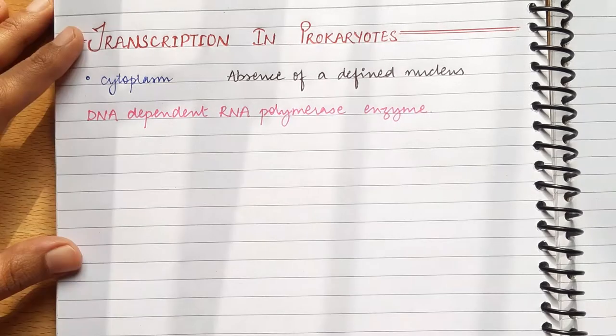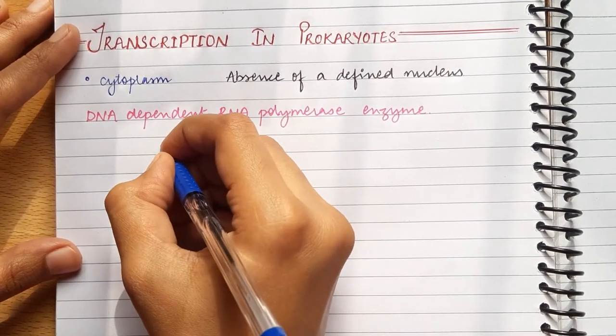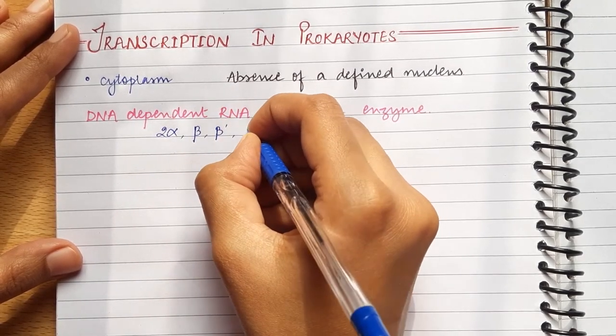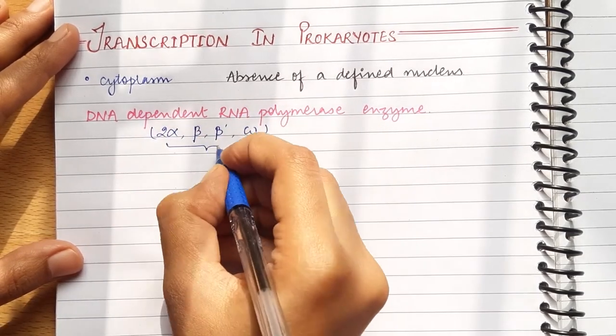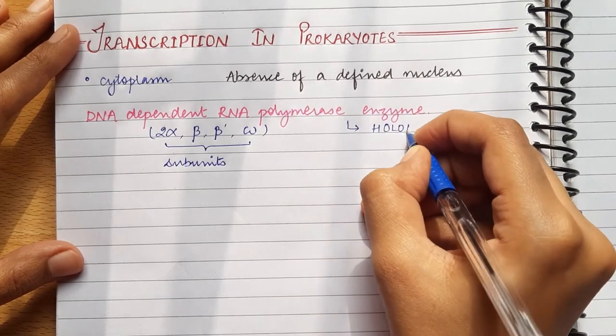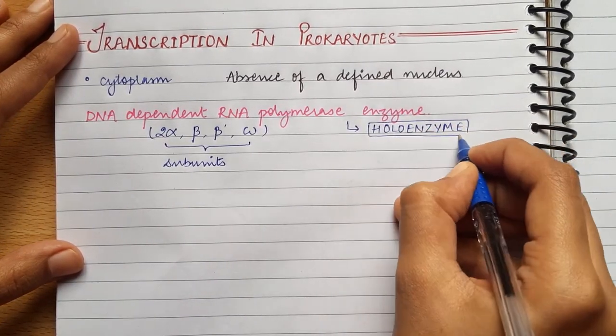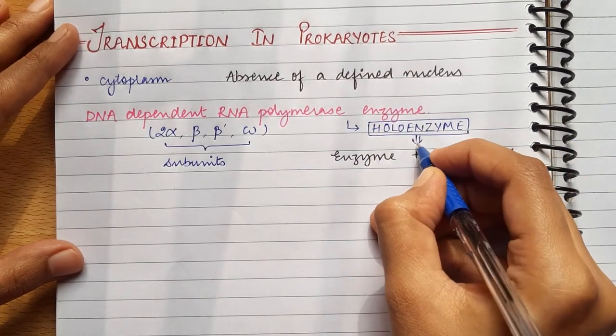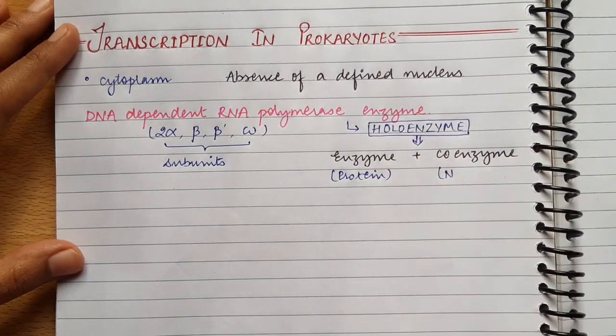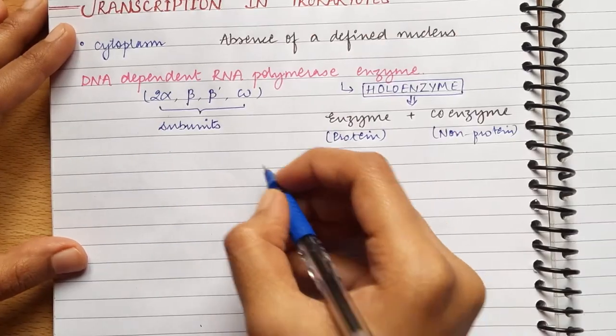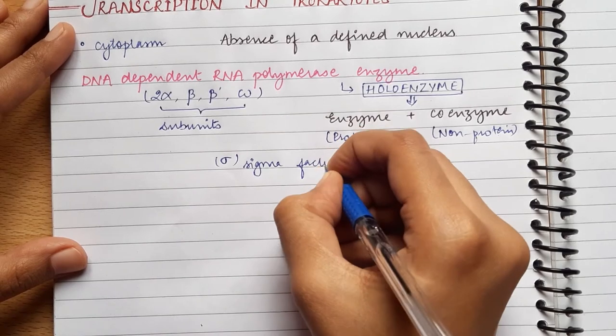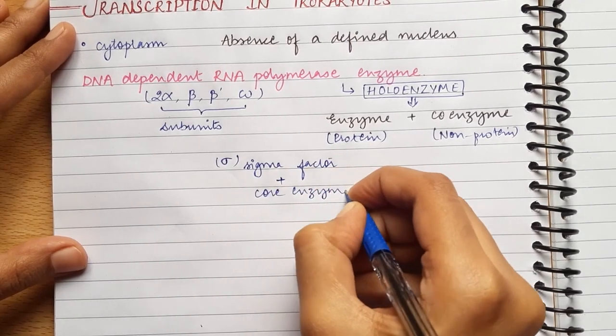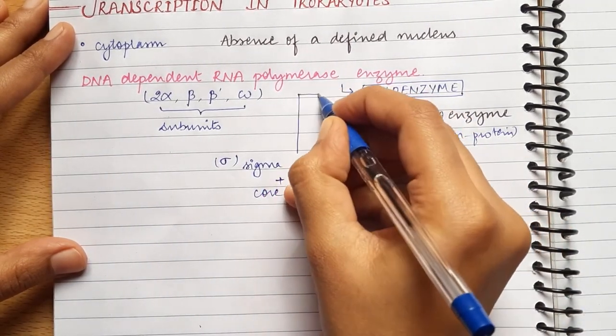Now this RNA pol enzyme has five subunits: two alpha subunits, one beta subunit, one beta dash subunit and one omega subunit. This enzyme is a holo enzyme, which comprises of an enzyme and a coenzyme. Enzyme is the protein part and coenzyme is the non-protein part. The coenzyme part is sigma factor plus the core enzyme which consists of five subunits forms the holo enzyme. So sigma factor is the coenzyme part and the core enzyme is the enzyme part.